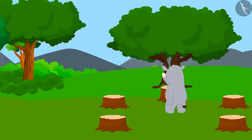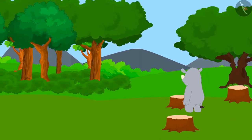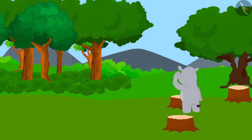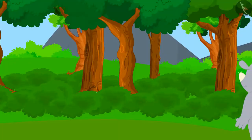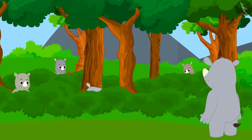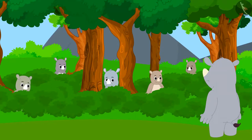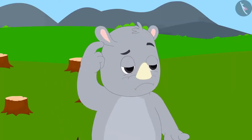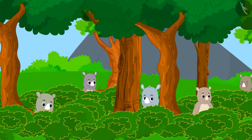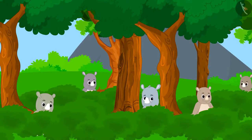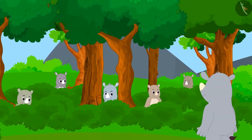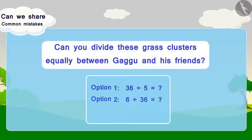Gaggoo Hippo is walking merrily. He saw some clusters of green grass at a distance. On going closer, he saw that 5 of his friends were already there. There are 36 clusters in total. Can you divide these grass clusters equally between Gaggoo and his friends? Choose the correct option from the options given below.